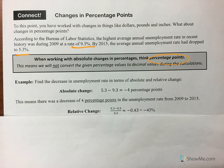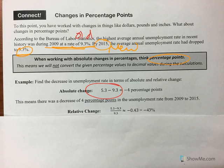So the example given here: in 2009 it was 9.3% and in 2015 it was 5.3%. So 2015 is your new value and 2009 is your old value. Their absolute change — new minus old — it went down four, but that's four percentage points, from 9.3 to 5.3. That's a decrease of four percentage points.